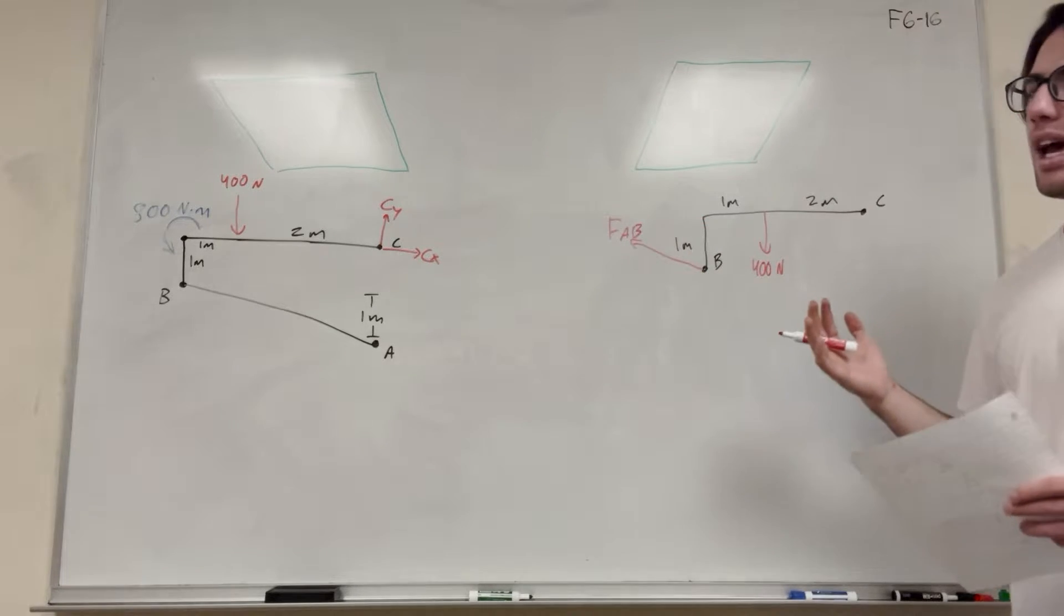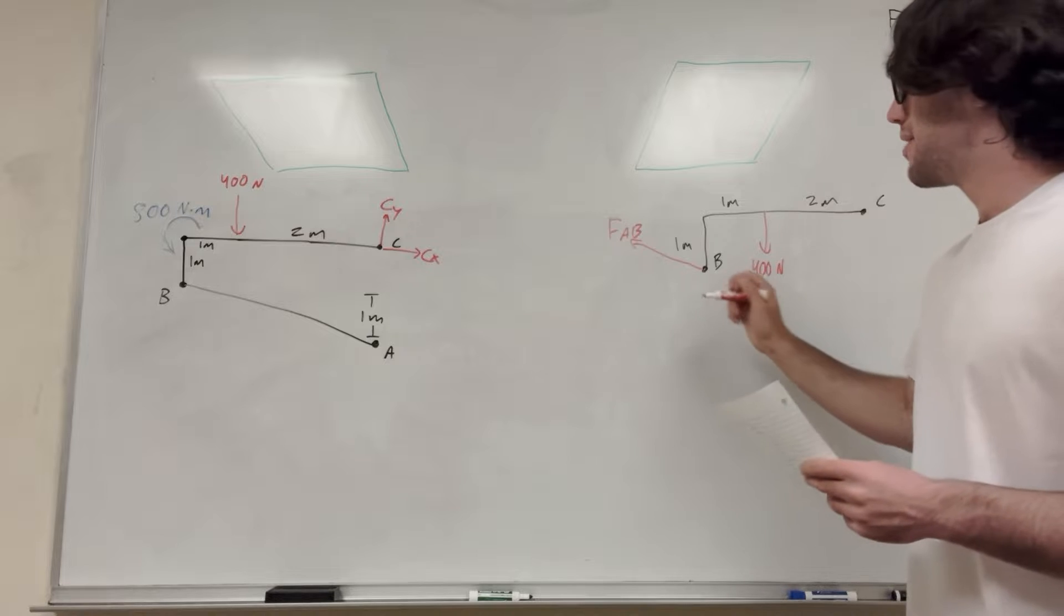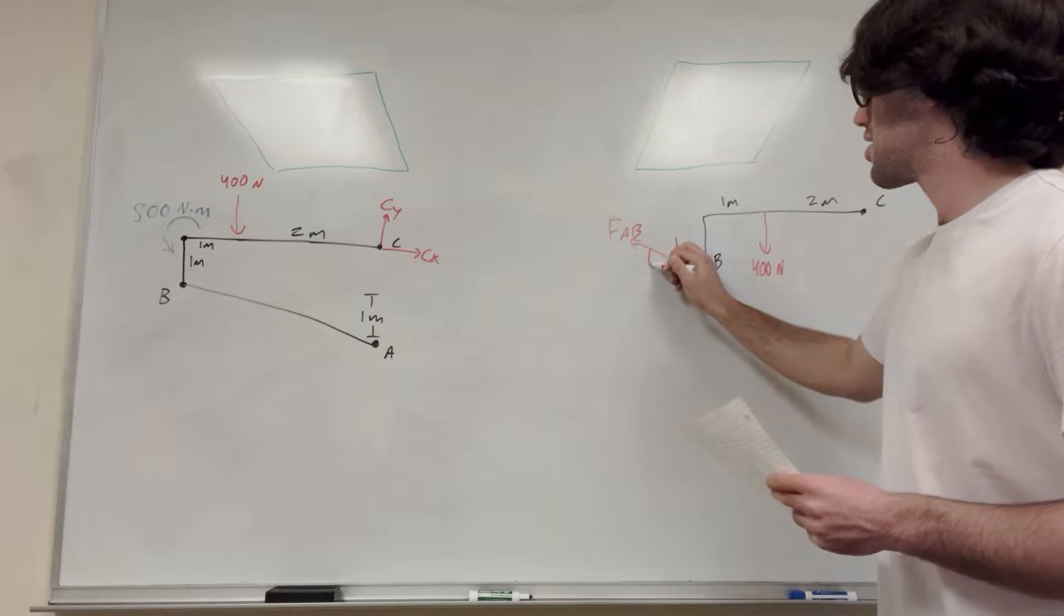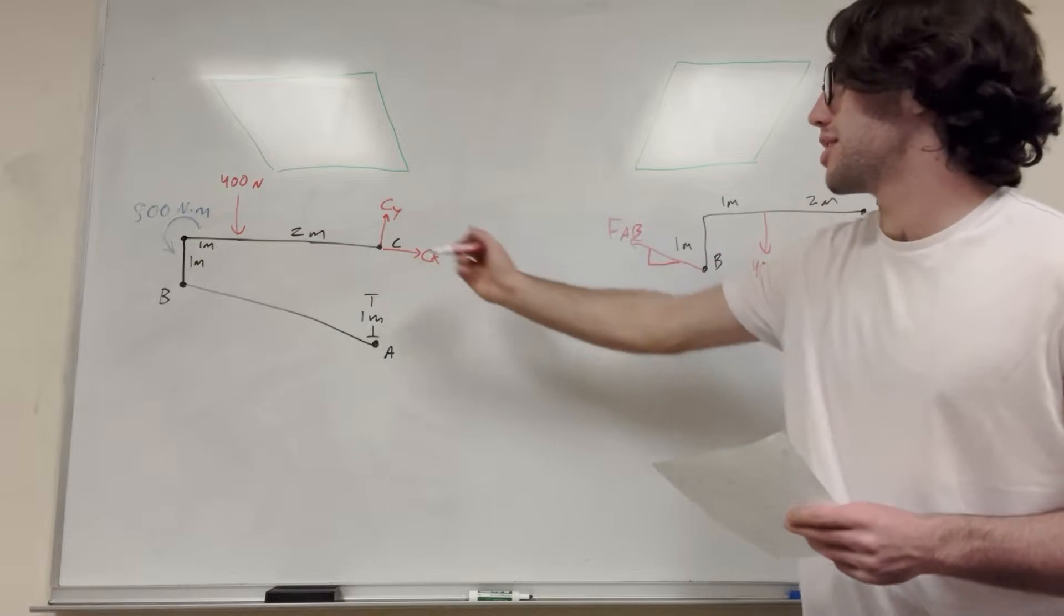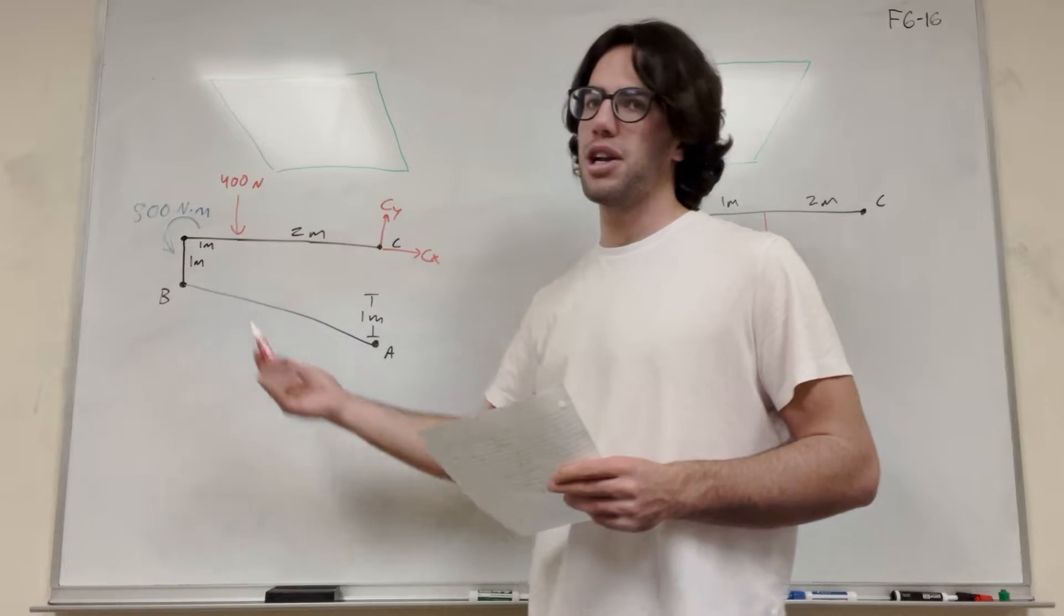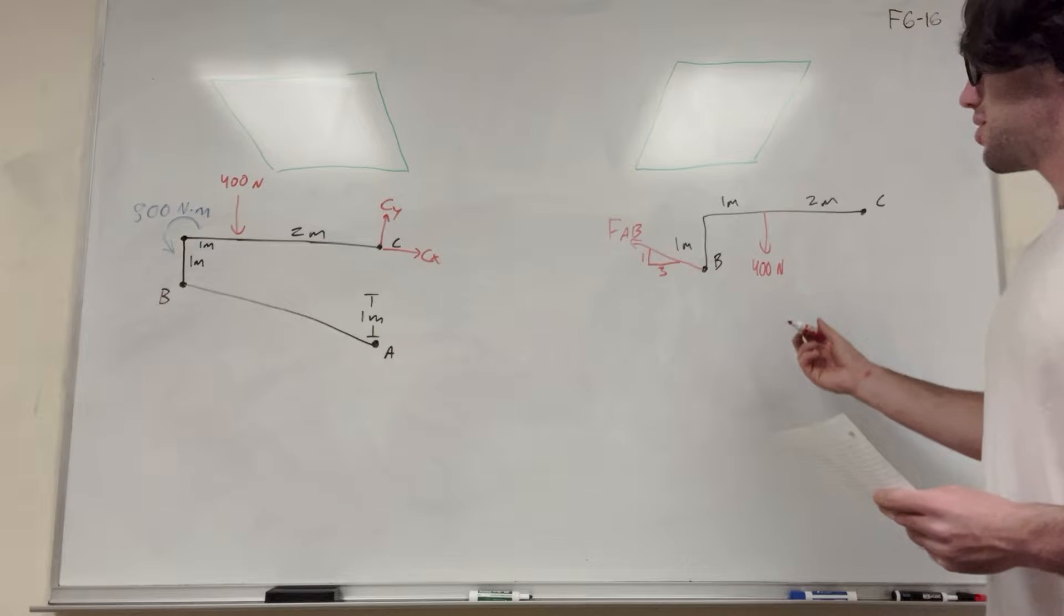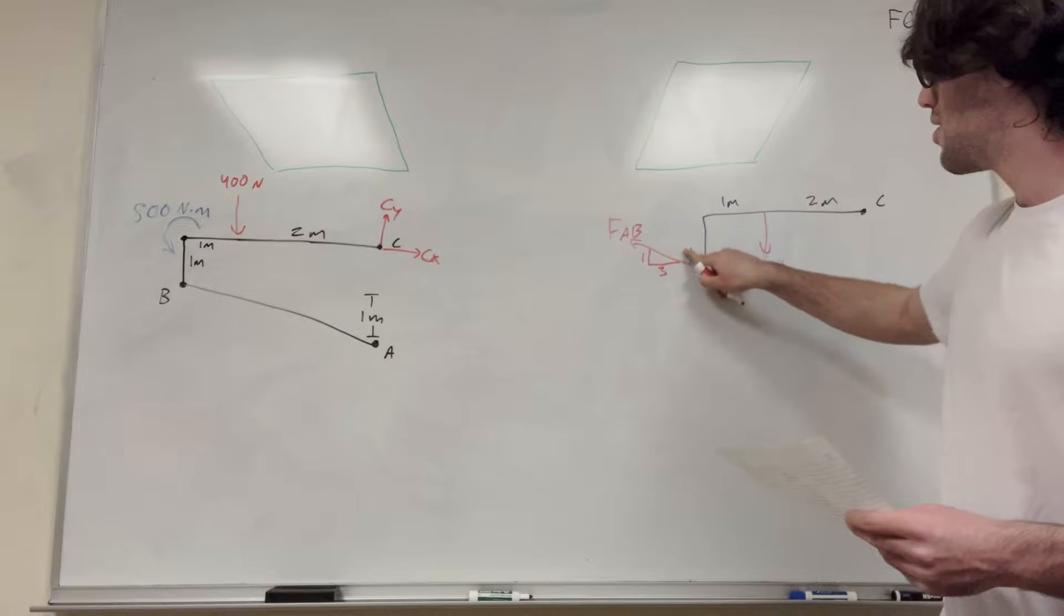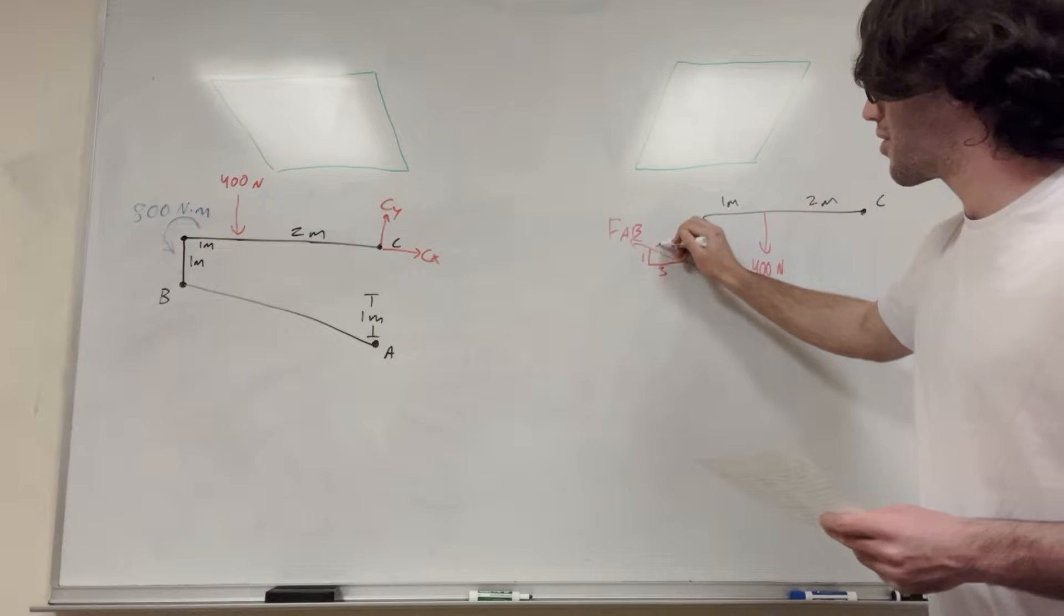It's pushing at the same angle that AB is. And we know that this triangle has a ratio. It goes over three meters, goes up one meter. This is three meters across, one meter up. And so if you do the Pythagorean theorem, you can find that the hypotenuse of this is square root of 10.